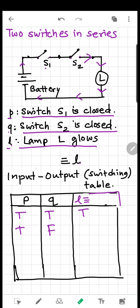Now let's talk about this situation: P is true — switch S1 is closed — but Q is false, meaning switch S2 is not closed, so S2 is open. If S1 is closed and S2 is open, current will not flow. So lamp L does not glow.